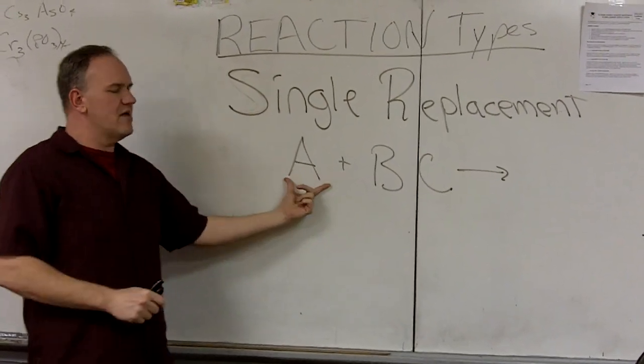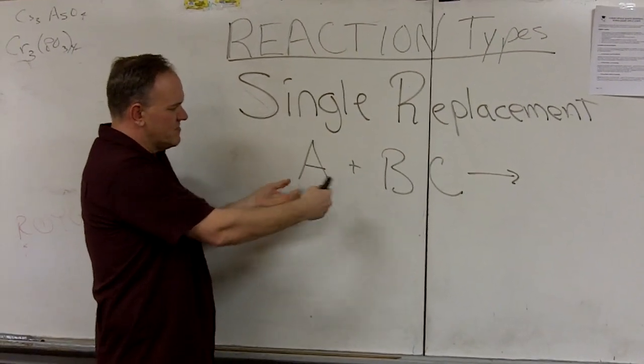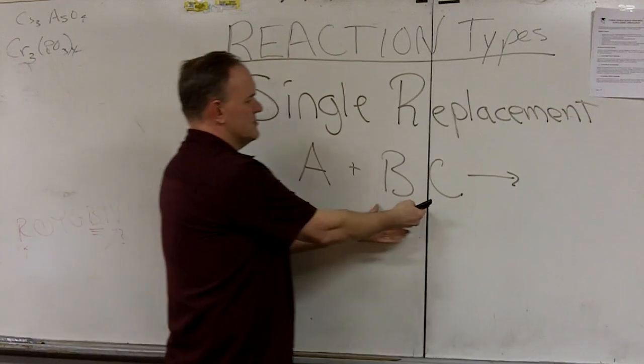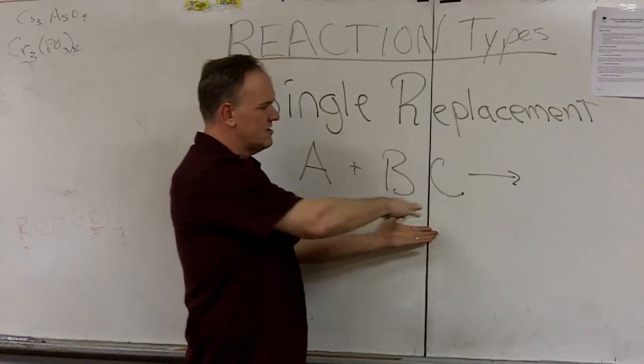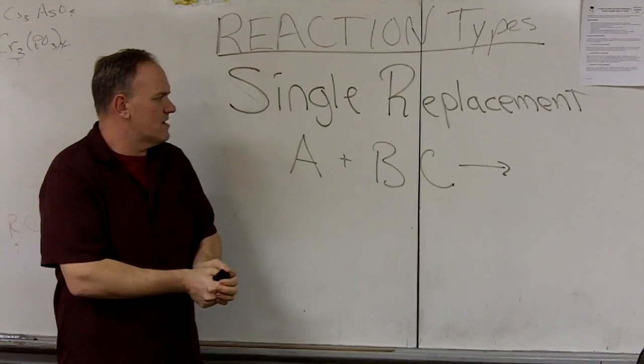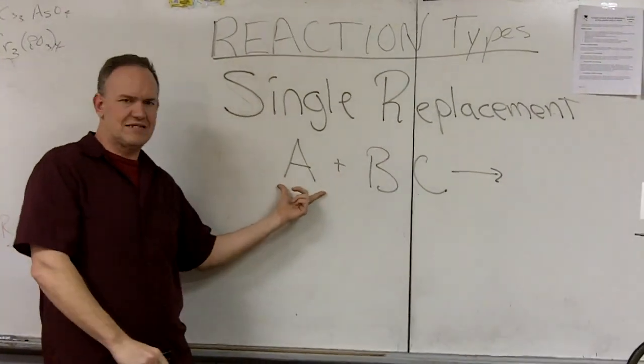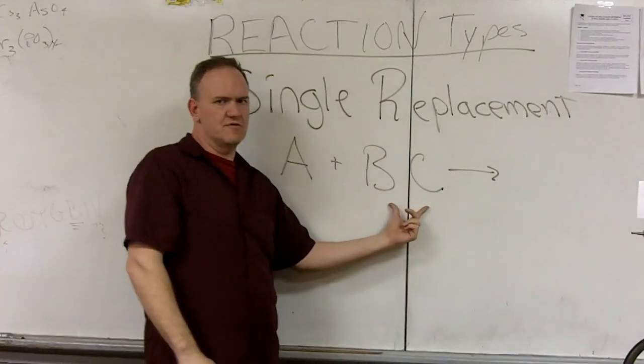It's of the general form A, where you have some kind of element A that's by itself, plus some sort of compound, in this case represented BC. You can think of them as going to a dance or something. So A goes stag and BC goes as a couple.